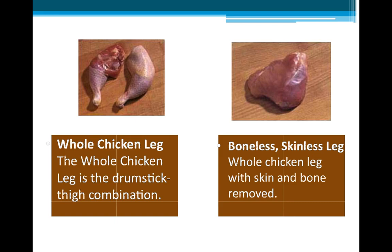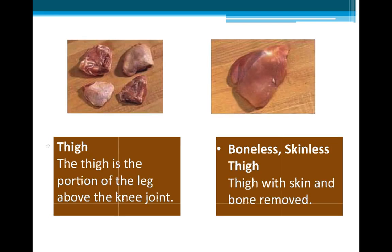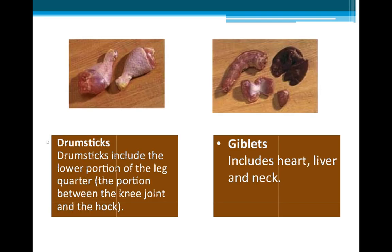The whole chicken leg is the drumstick plus thigh combination. When the whole chicken leg has skin and bone removed, it is called boneless or skinless leg. The thigh is the portion of the leg above the knee joint; when bone and skin are removed it is called boneless skinless thigh. The drumstick includes the lower portion of the leg quarter, between the knee joint and the hock. The giblets include the heart, liver, and neck.